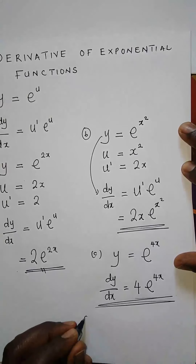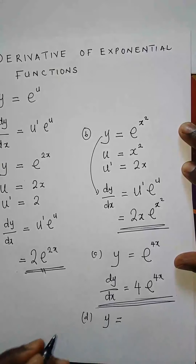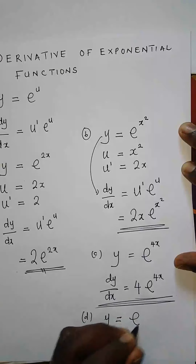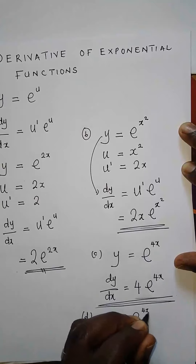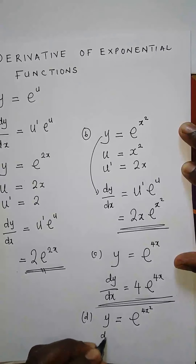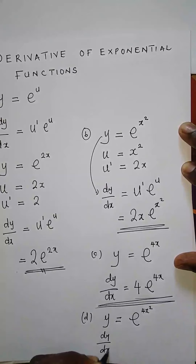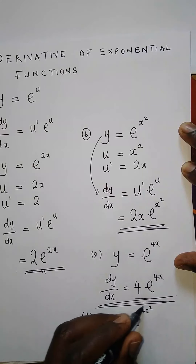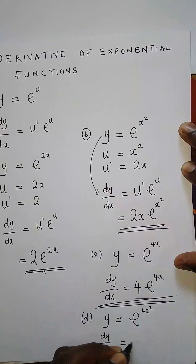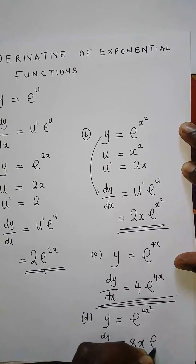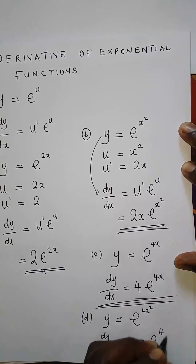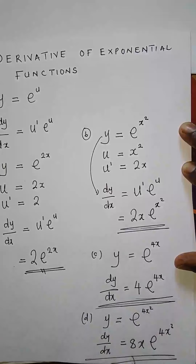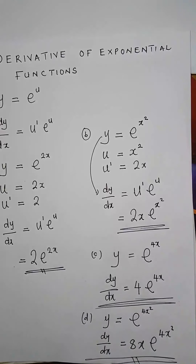We can also have y equal to e to the power 4x squared. So what is dy/dx in this case? Dy/dx is equal to the derivative of 4x squared, which is 8x, and then we write the original function as it is: 8x times e to the power 4x squared. This is how we find the derivative of exponential functions. Thank you.